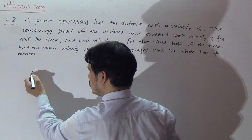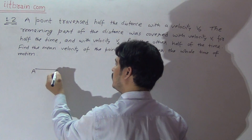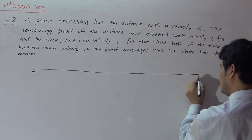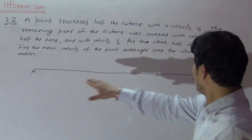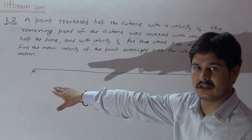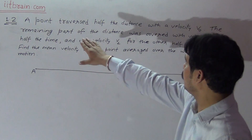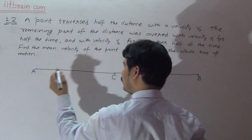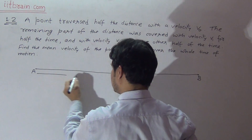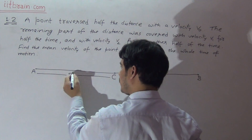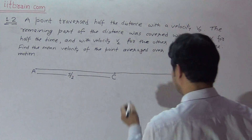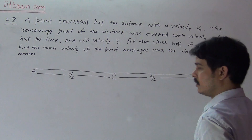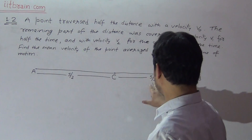Let A be the starting point of the particle's motion and B be the final point. This is the whole track of the motion of the particle. A is the initial point, B is the final point. A point traversed half the distance with velocity V0, meaning up to the middle point C. The first half of the journey is S/2 and the remaining part is also S/2, so the total length of the journey is S.